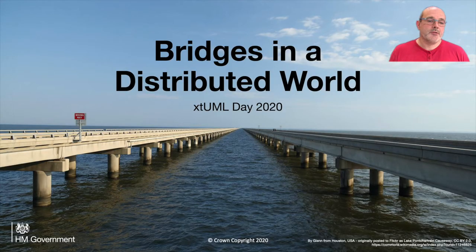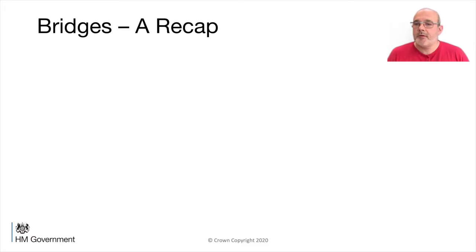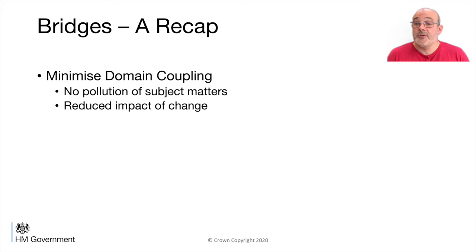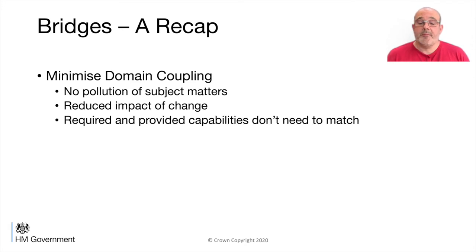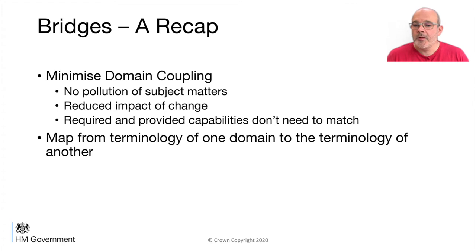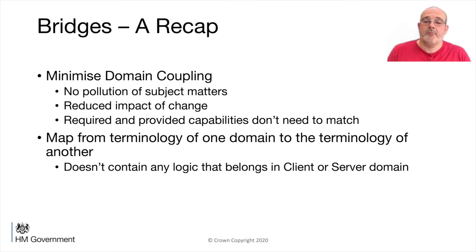I'll be mostly following on from Colin's talk today and taking a closer look at bridges. In particular, I'll be looking at how they're useful in a distributed world. So a quick recap of what bridges are - this is basically stolen from Colin's presentation earlier. They're there to minimise domain coupling, so there's no pollution of subject matters. It reduces the impact of change, and the required and provided capabilities don't need to match each other. You can do some sort of mapping in the bridge to change between different names, terminologies, units, or invent new values. You can map the terminology of one domain to the terminology of the other, and they shouldn't contain any logic that belongs in either domain.